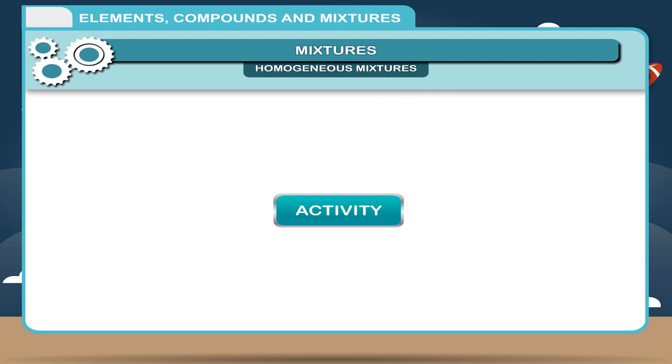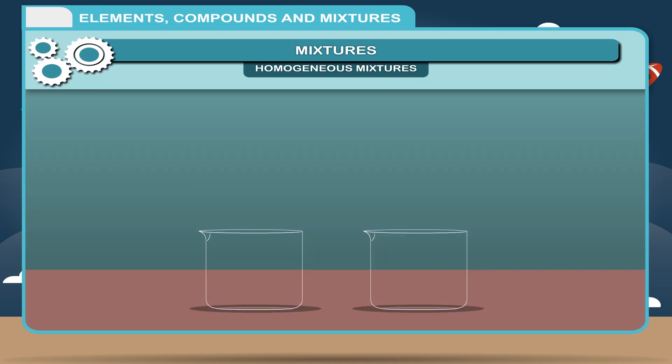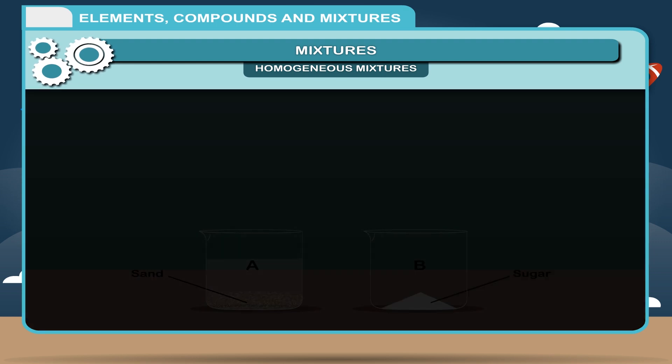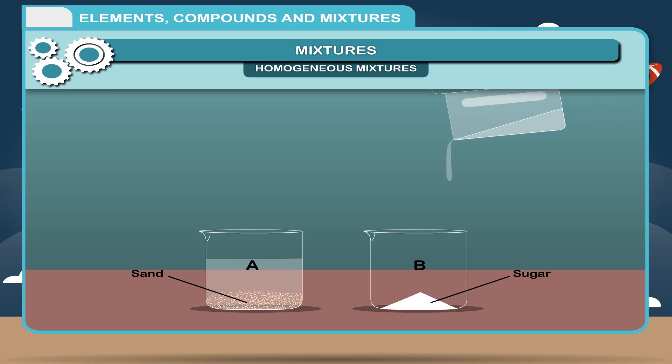Activity: Take two beakers and mark them as A and B. Put some sand in beaker A half-filled with water and stir it well. Can you still see the sand particles in water, or do they disappear? Now put some sugar in beaker B half-filled with water. Can you see the sugar particles in water? They disappear as they uniformly dissolve in water, resulting in a homogeneous mixture.